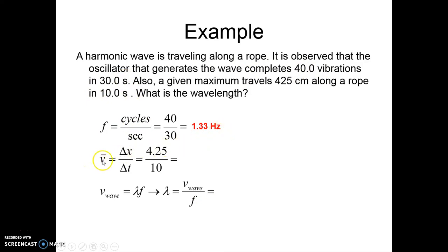And then my velocity, we're using that new, that alternative method of doing it. So here, my standard unit we know for velocity would be meters per second. So this is the distance in meters that my wave travels in that time period. So they tell me that it goes 425 centimeters, which would be 4.25 meters in 10 seconds. So 0.425 meters per second.